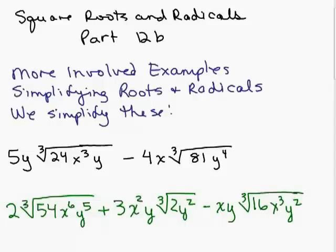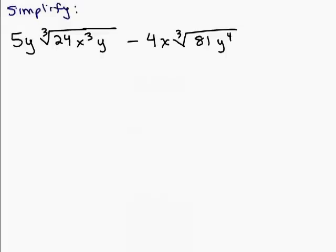This is part 12B of square roots and radicals and we do the following two problems on this video. All right, we're going to simplify this problem. So right now the variable part with the cube root is not the same on each of them so they don't look like like terms at all. So what we're going to do is begin by simplifying each term separately.